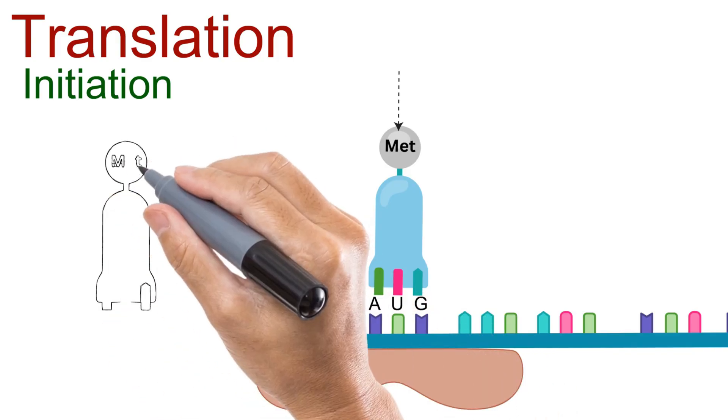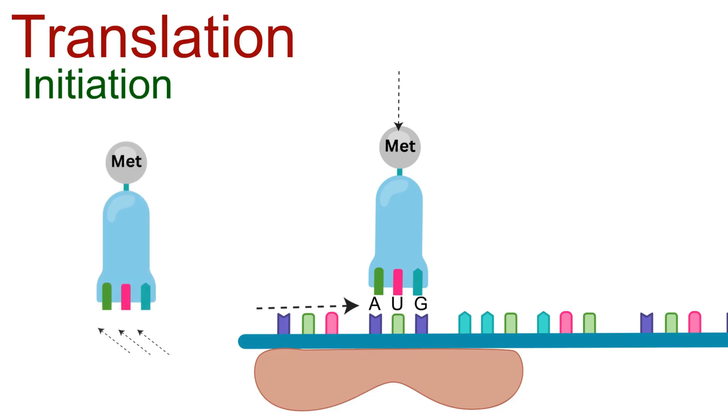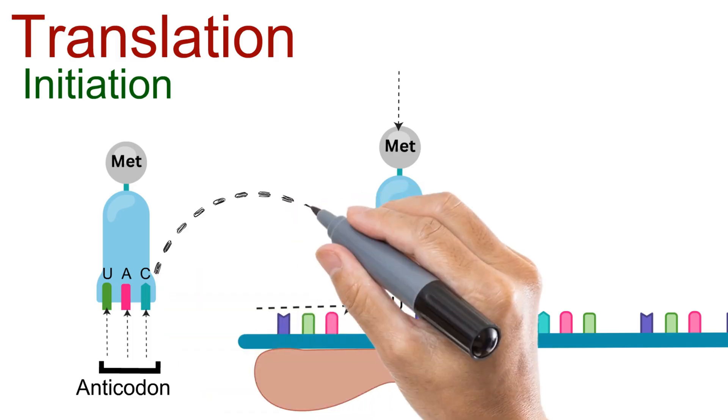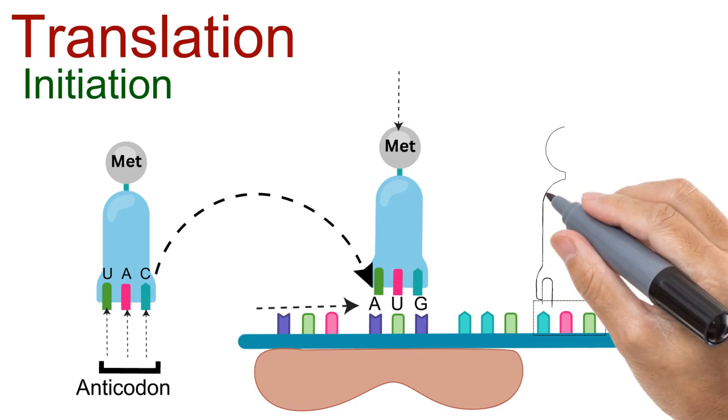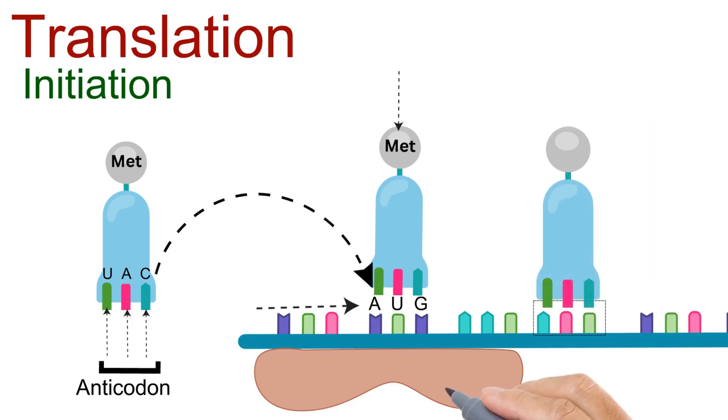An anticodon is a set of three bases on the transfer RNA, complementary to the codon on the mRNA. This ensures accuracy, because each codon in the mRNA has a matching anticodon on a specific tRNA, and every tRNA carries only its designated amino acid.